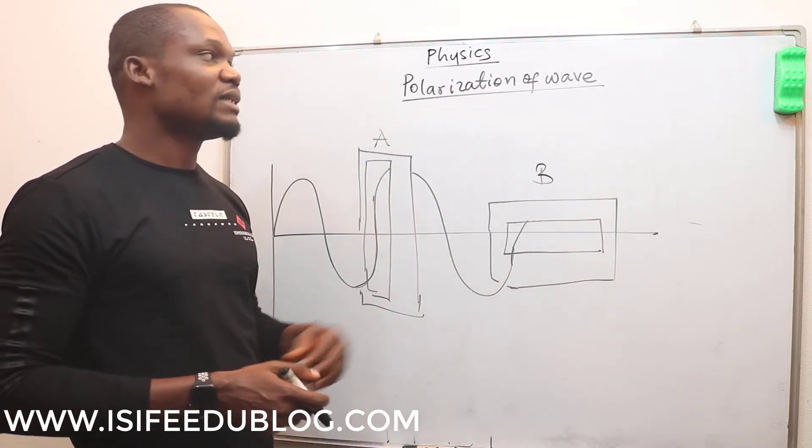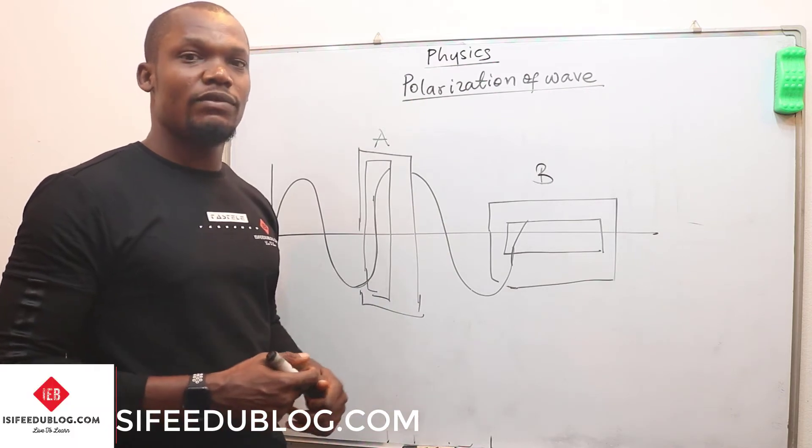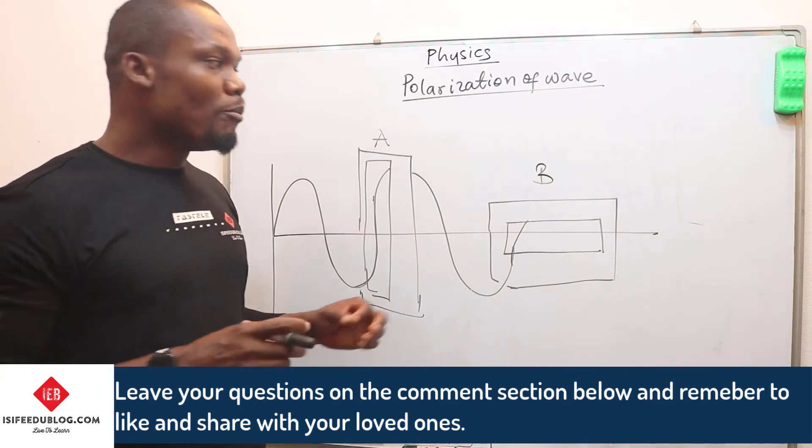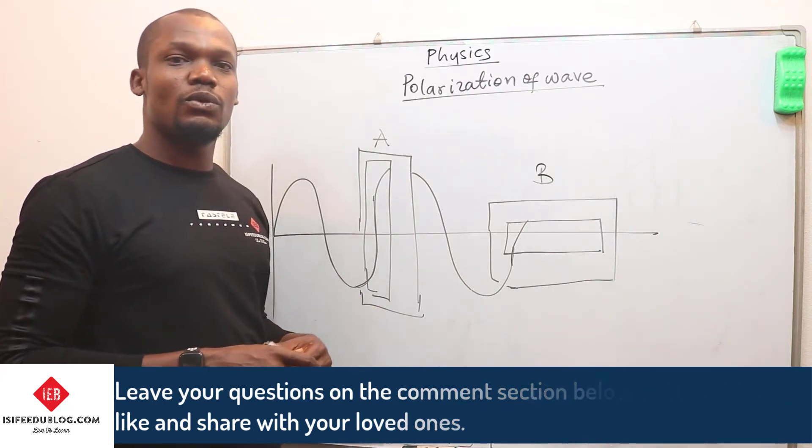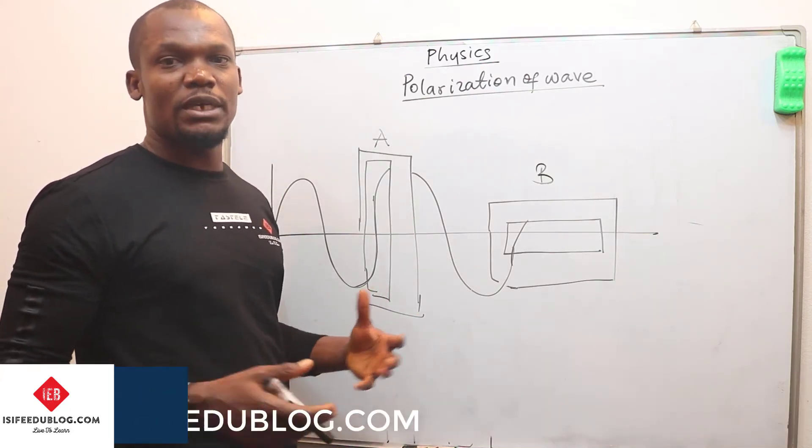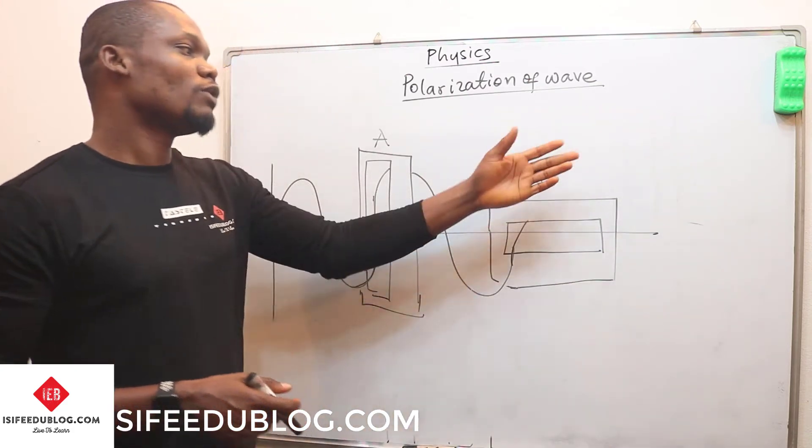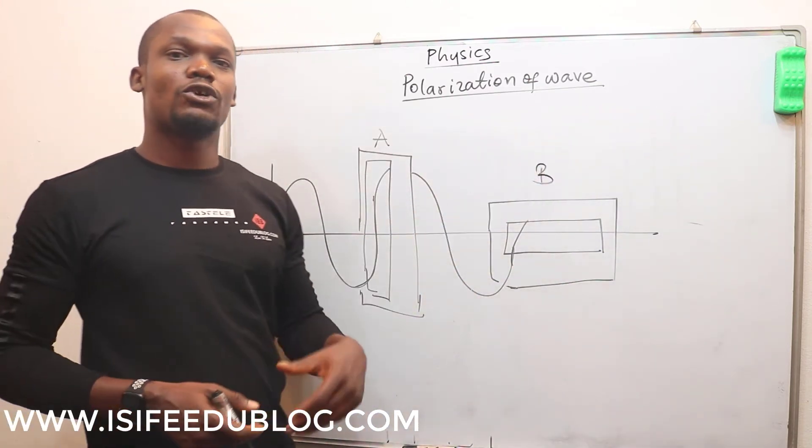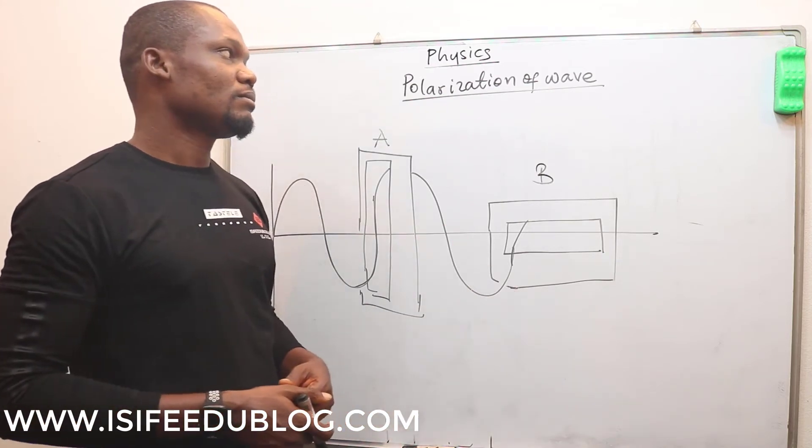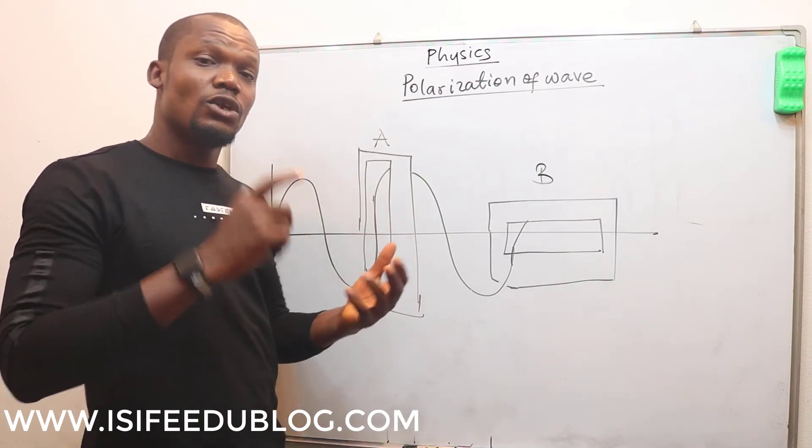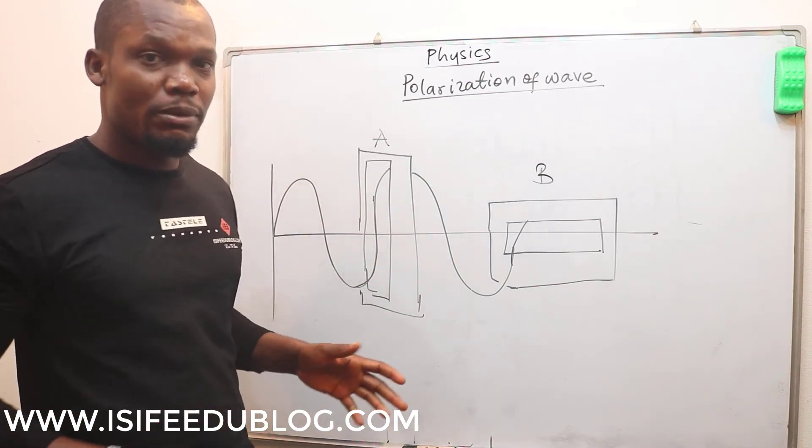And it is very important to know that for polarization of wave, it is only transverse waves that can be polarized. Most times in WAEC or JAMB or UTME questions, they give you some waves and ask you which of these waves can or cannot be polarized. Now, only transverse waves can be polarized. This means that longitudinal waves cannot be polarized.